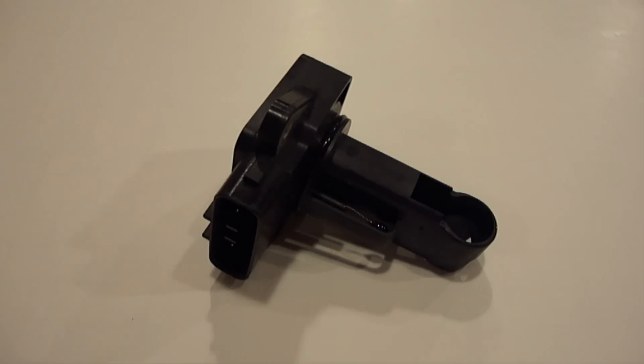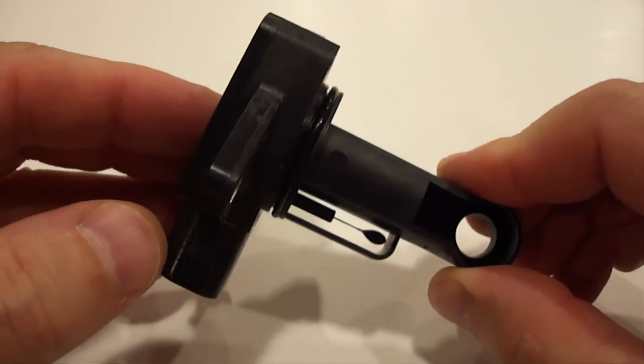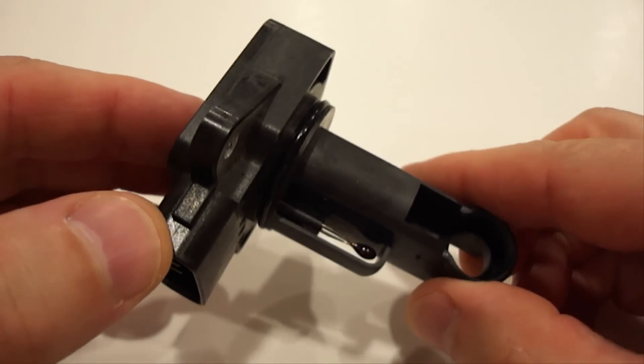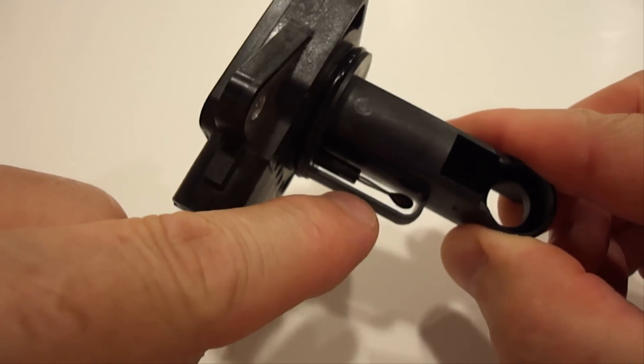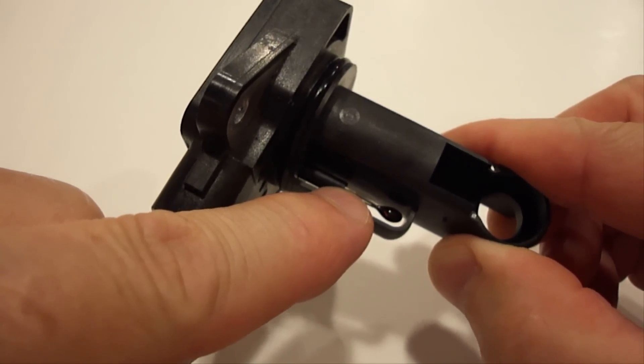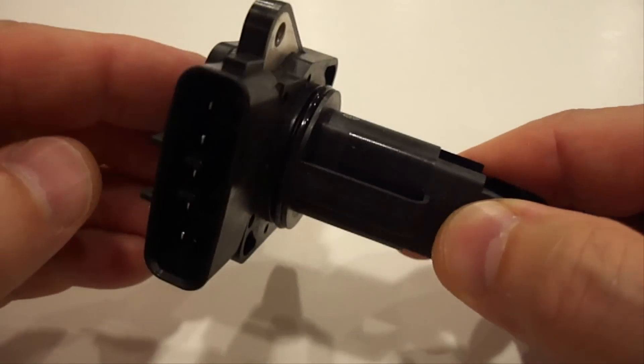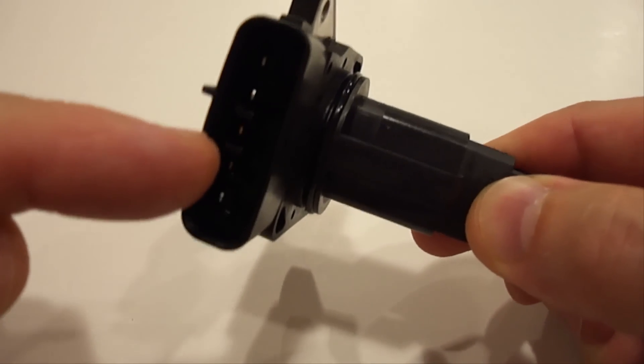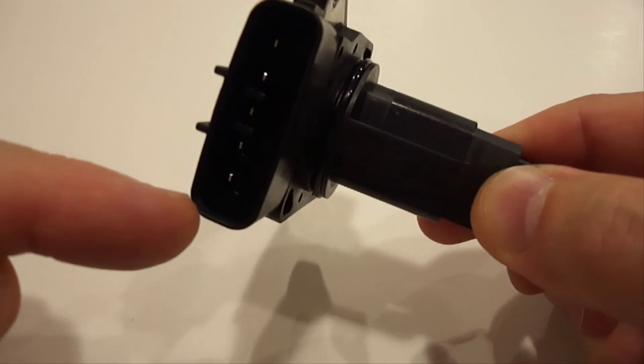So this is what my mass airflow sensor looks like. Yours might look a little different. These are actually little computers or microprocessors and most of them have two wires like the one you see right here which is the actual sensor. It will also have an electrical connection like the one you see here so you can connect it on and off.